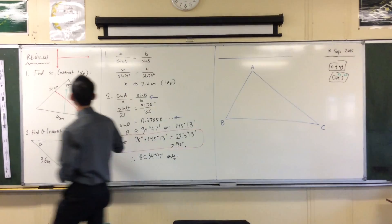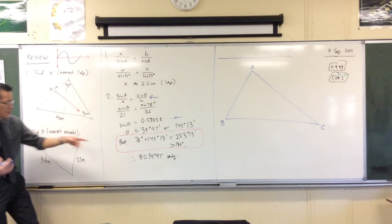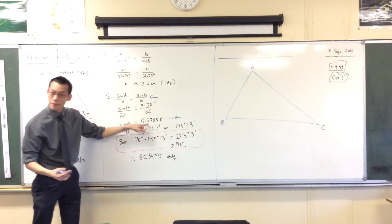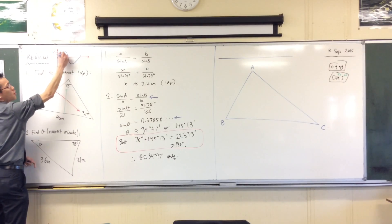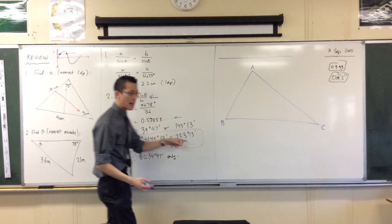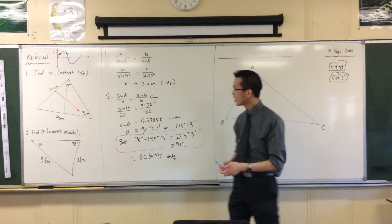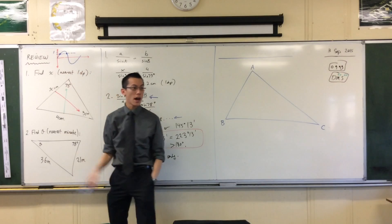But because sine looks like this, and if you have some value, like 0.57, so if this is 1, then 0.57 is around there. I get my two solutions, and that's why there's this problem. But that only comes about because of what sine looks like. That's the shape of sine.